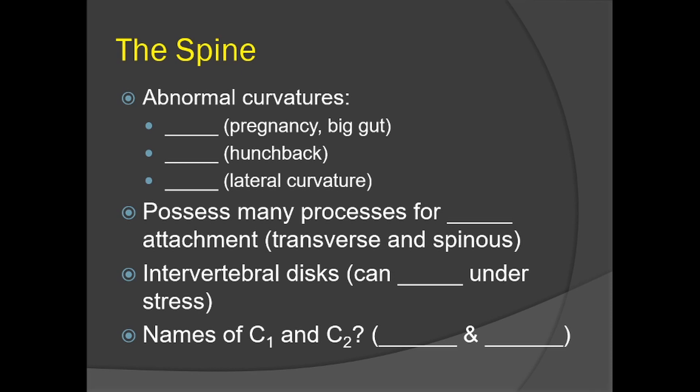We have three abnormal spinal curvatures. The first is lordosis, which occurs temporarily when a woman is pregnant or someone has a large gut. The second is kyphosis, which presents as a hunched back. The third is scoliosis, a lateral curvature of the spine, which can be very debilitating — some students have required surgery and special educational environments due to the pain.